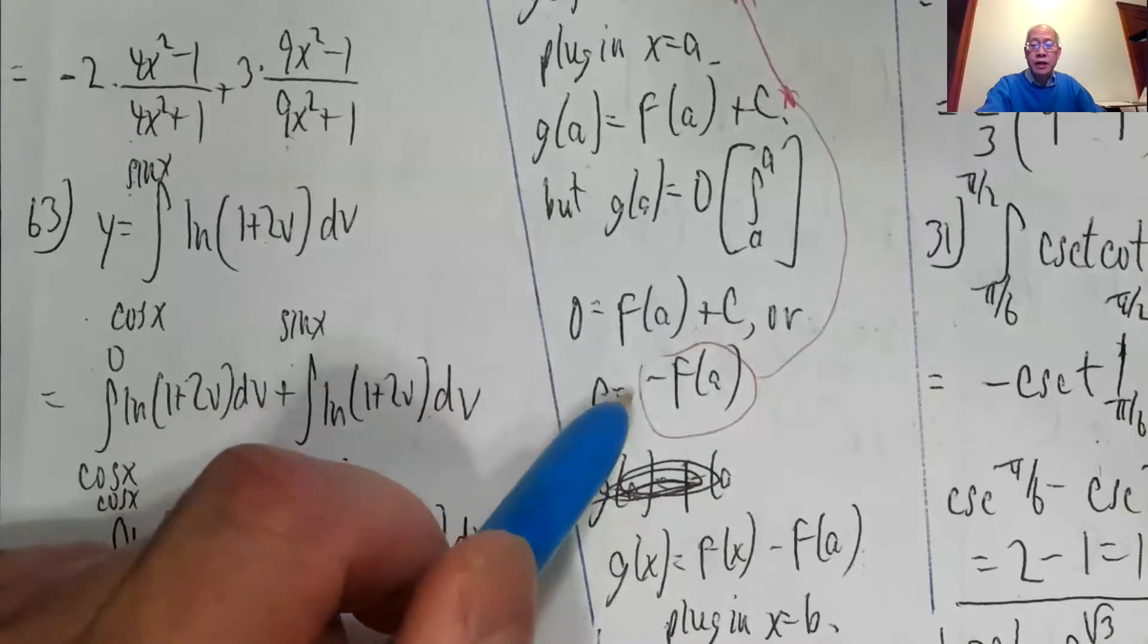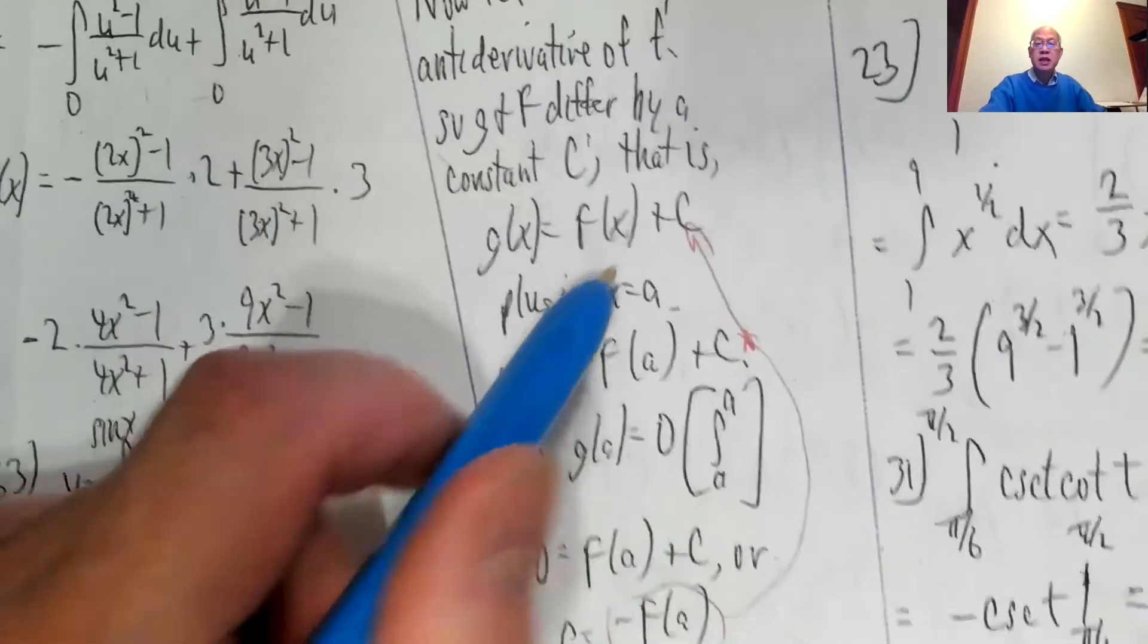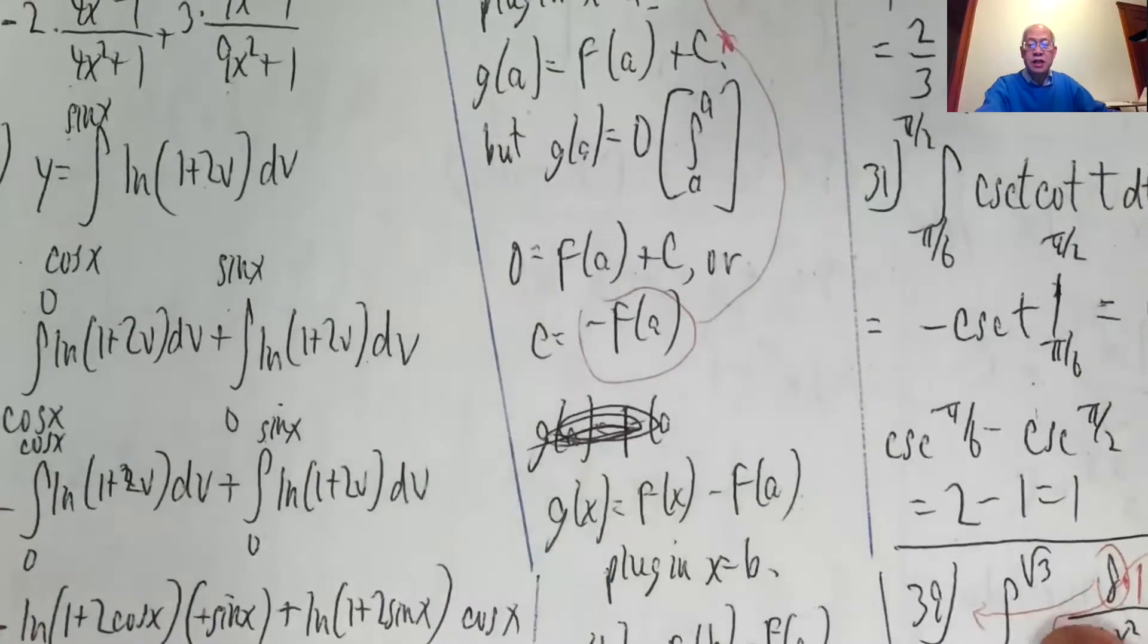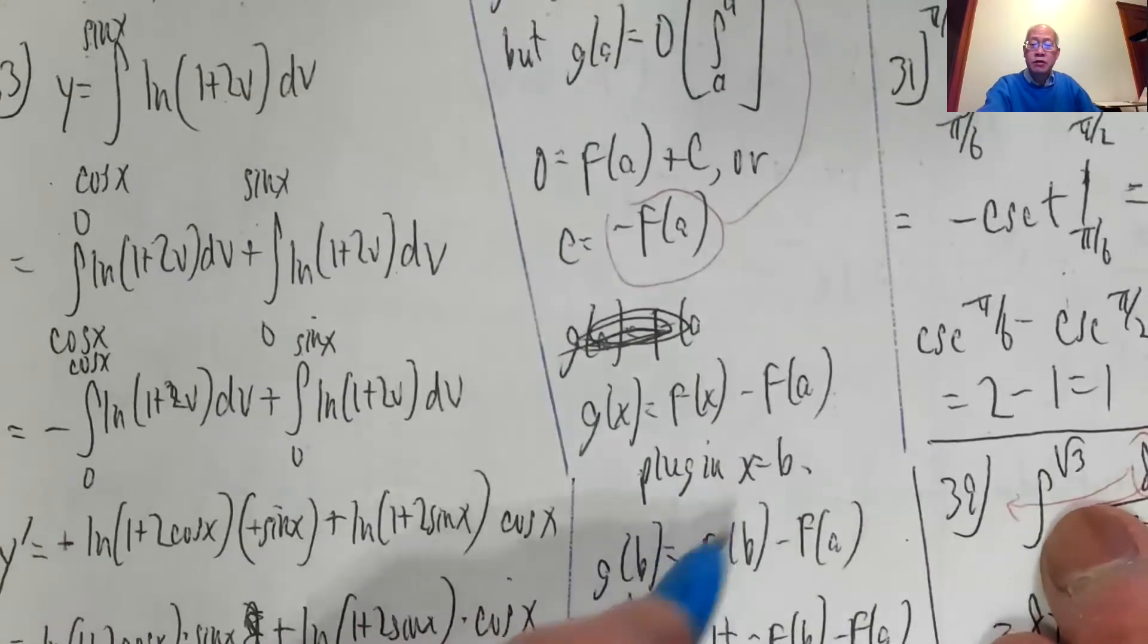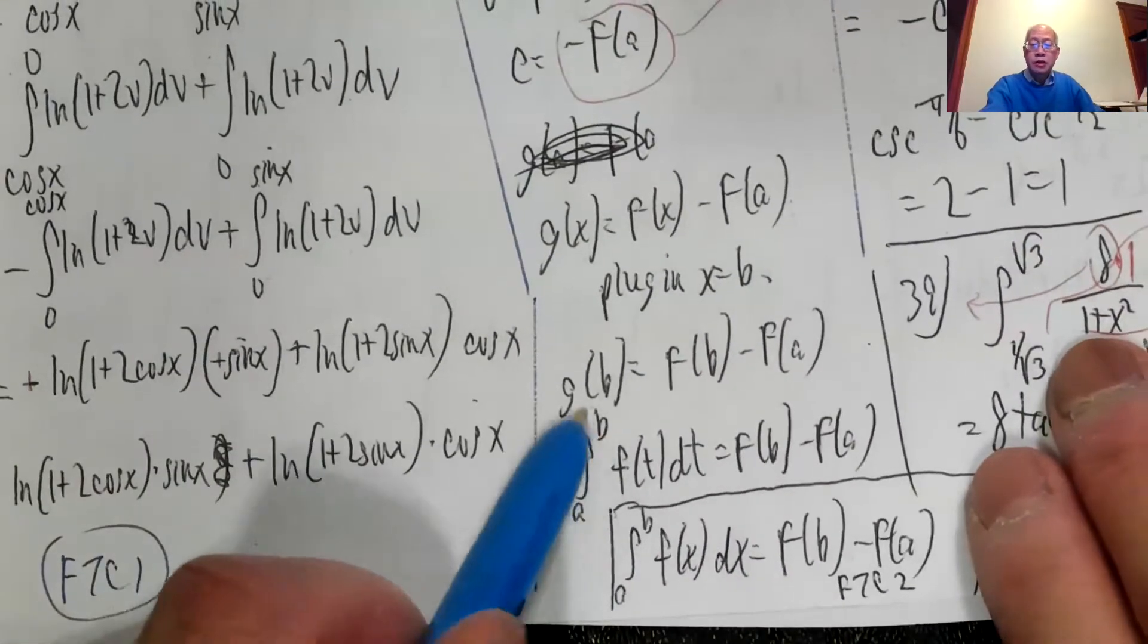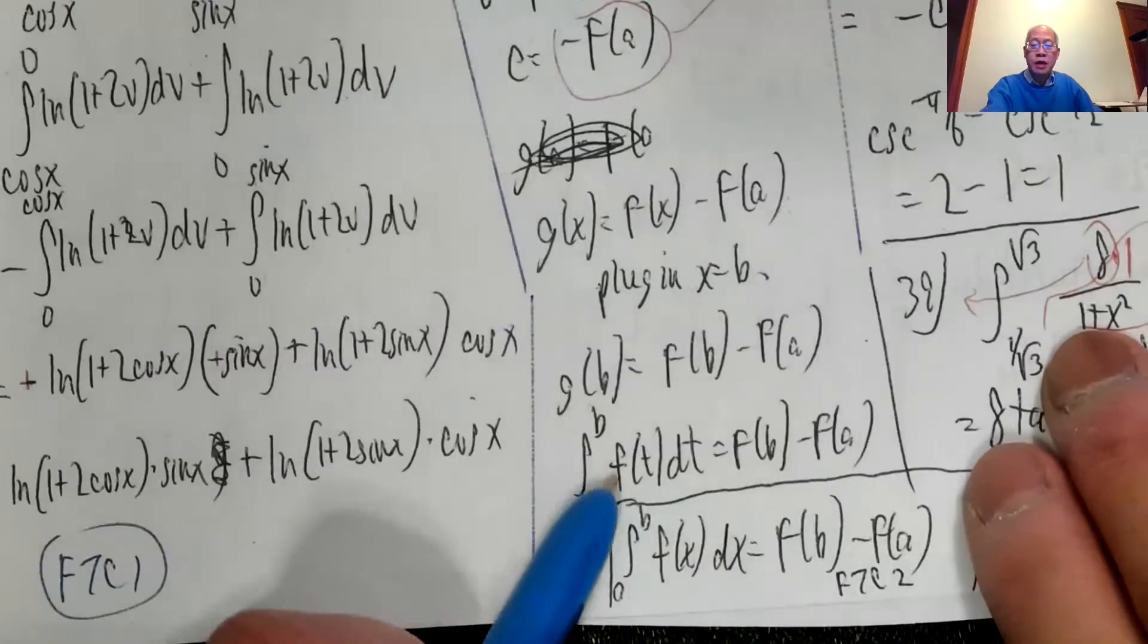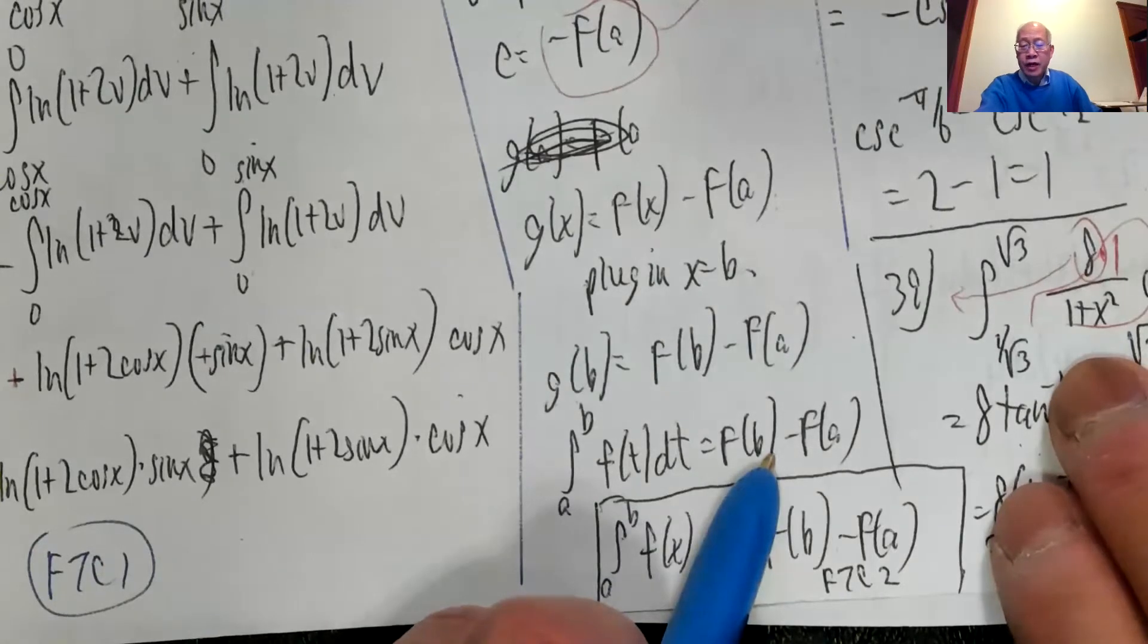So I found c to be negative f of a. So g of x is now f of x plus c, I can rewrite it as g of x is capital F of x minus capital F of a. Now I plug in x equals b. g of b is capital F of b minus capital F of a, but g of b is defined to be the integral from a to b of f of t dt, capital F of b minus capital F of a.